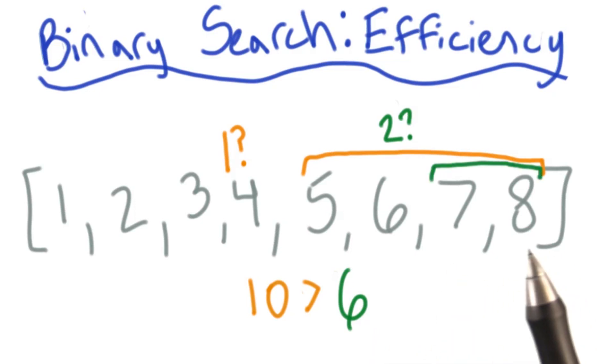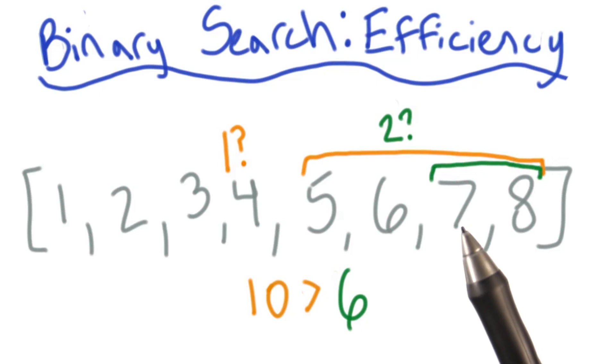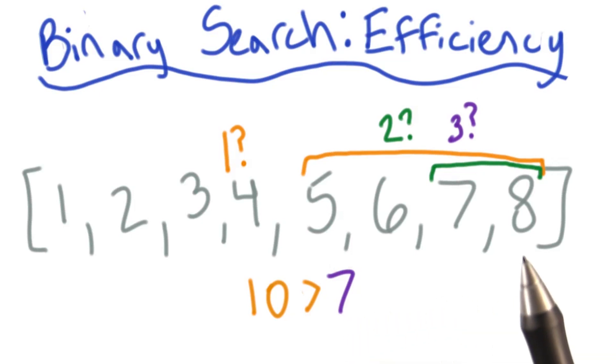Yet again, we have an even number of elements, so we're going to err on the lower side and check there first. Since 10 is greater than our middle element 7, we're left with just the last element now.